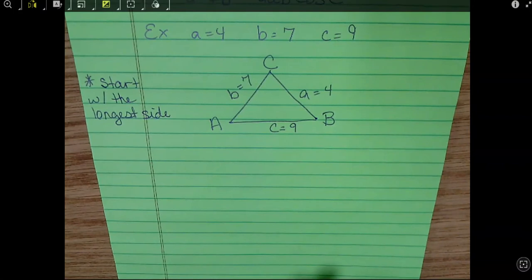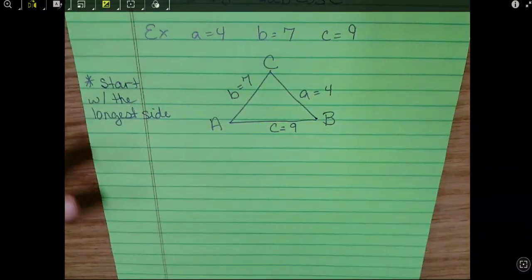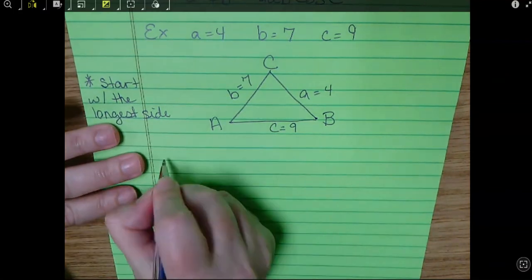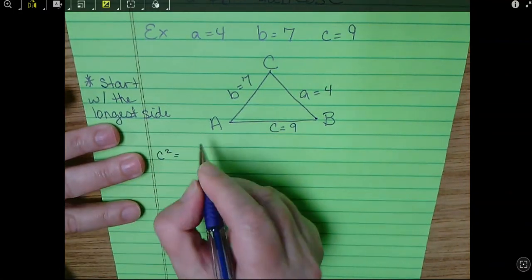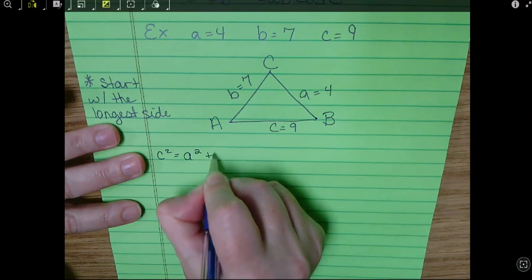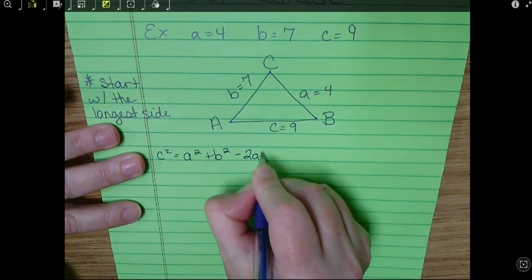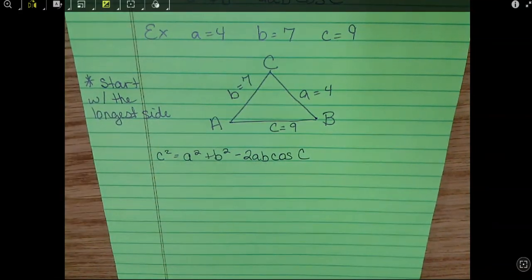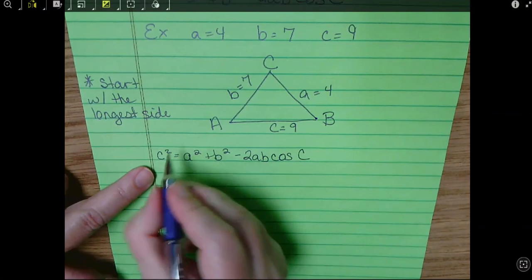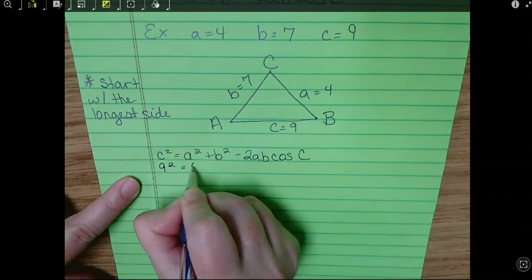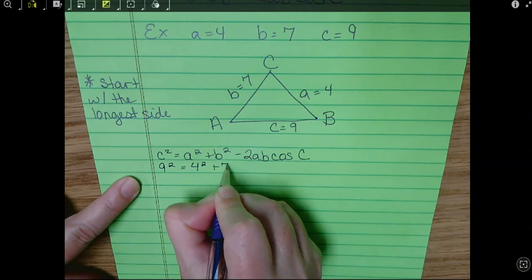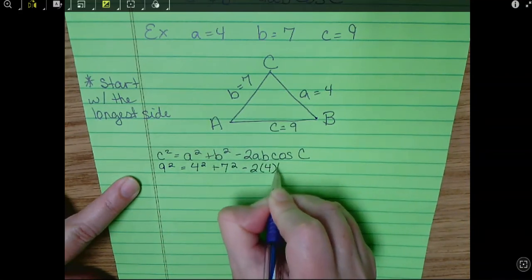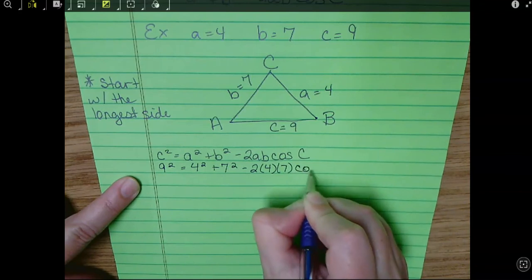Okay, you have to or you're not going to get it right. Okay, so I got to find C. So here's the formula. C squared equals A squared plus B squared minus 2AB cosine C. Here we go.